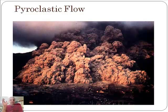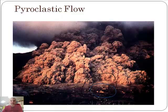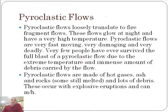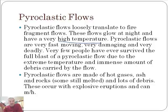Pyroclastic flows are probably one of the most dramatic things associated with a volcano. They are unbelievably powerful and deadly. If you look at this picture, sadly there are houses on there — hopefully the people left before this happened, because they are about to die if they're there. They're loosely translated to 'fire fragment flows' — pyro meaning fire. They glow at night and have a very high temperature. They are very fast moving and very damaging and deadly. Very few people have ever survived one. There's a story about a pyroclastic flow from Krakatau where islands 30 miles away were destroyed, and only about two people survived out of thousands. They are made of hot gases, ash, and rocks — they heat up the air so much that people suffocate or their lungs burn.